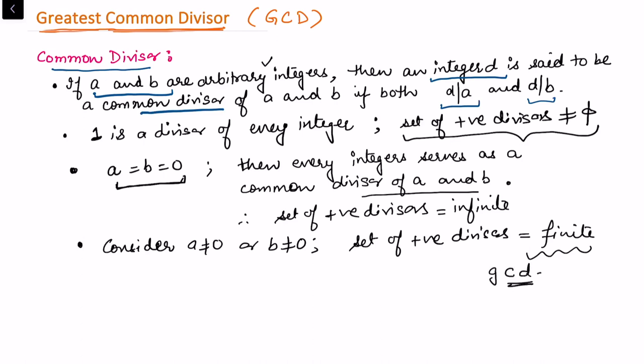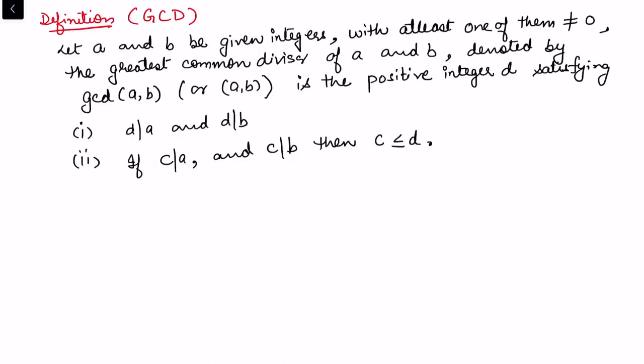As the set is finite, we can find the greatest common divisor in that set. Now we are ready to define the greatest common divisor. It says: let a and b be given integers, with at least one of them not equal to zero. The greatest common divisor of a and b, denoted by gcd(a, b) or simply (a, b), is a positive integer d.